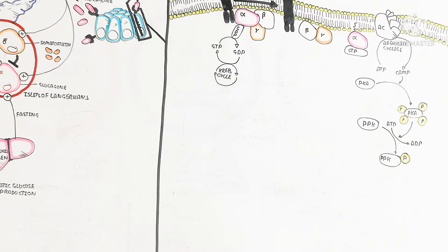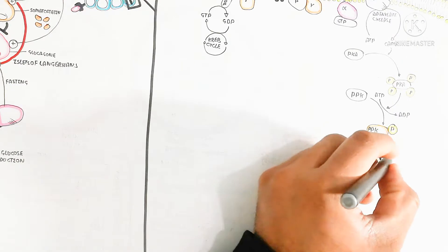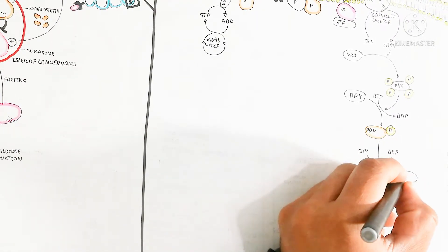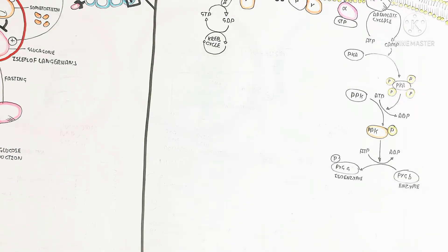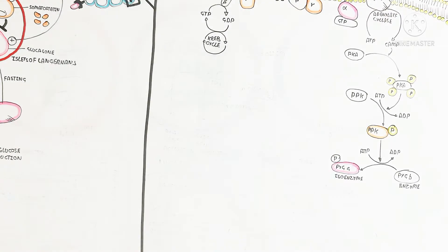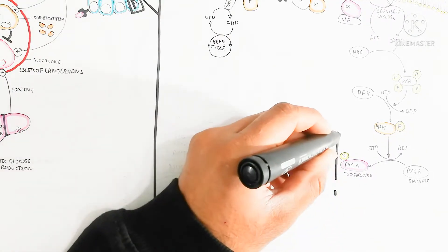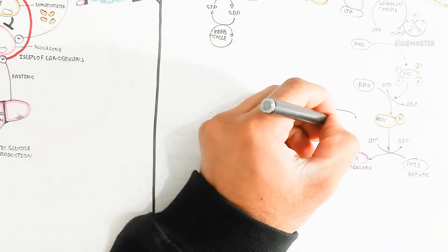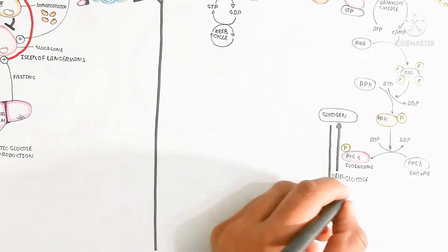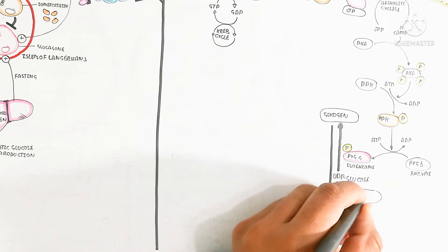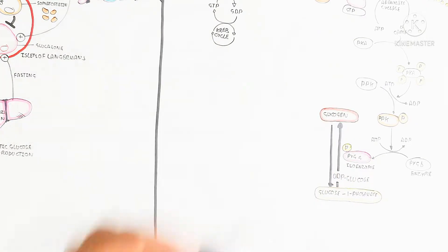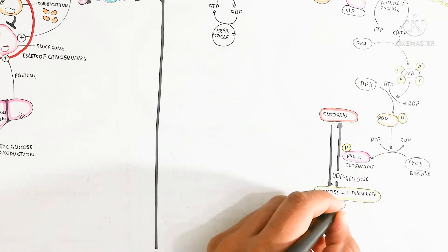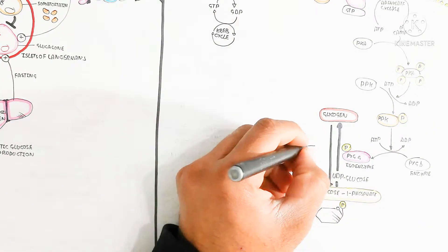Protein kinase A stimulates phosphorylase kinase (PhK), which uses ATP to produce activation, leading to phosphorylation. This stimulates the PYGA isoenzyme, converting the inactive PYGB isoenzyme to active PYGA. The active PYGA isoenzyme drives glycogenolysis — degradation of glycogen to produce glucose-1-phosphate. Glycogen synthesis uses UDP-glucose via the glycogen synthase enzyme.